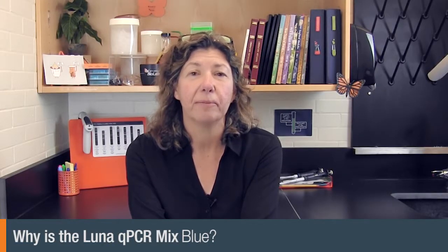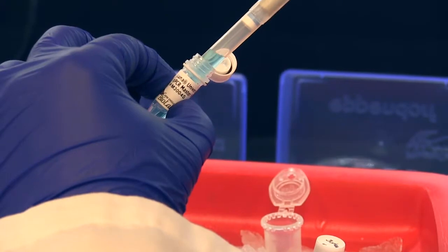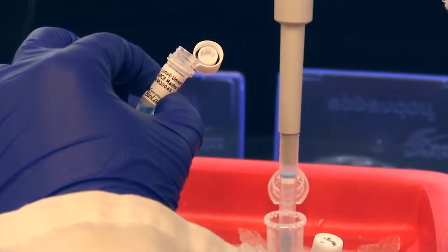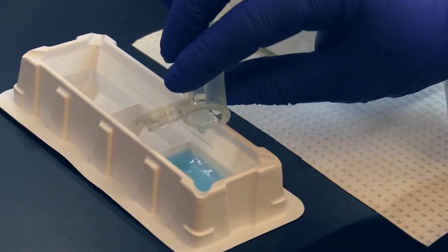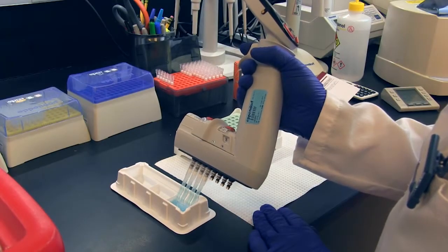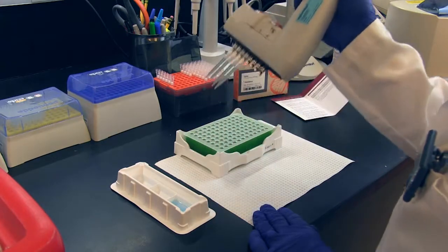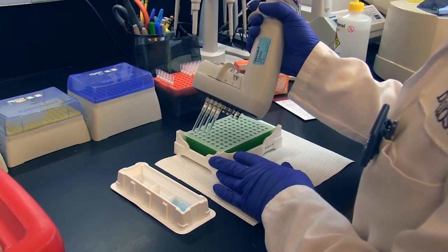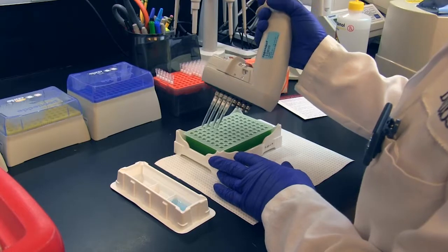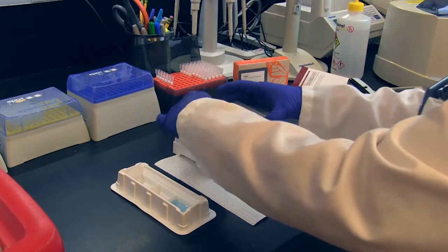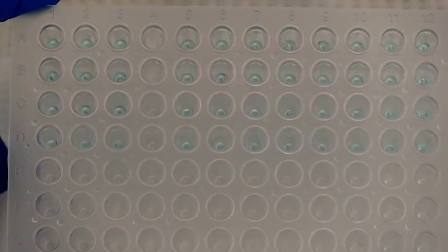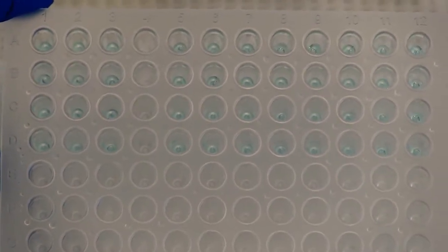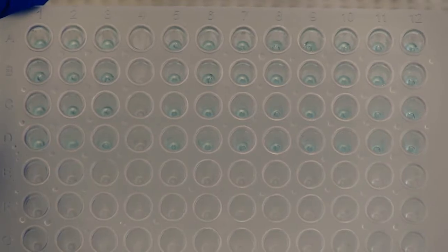Another common question we receive is why is the Luna qPCR mix blue? So this mix contains an inert reference dye that gives it a clear blue color. This colored appearance makes it easier to identify which wells of a qPCR plate have been loaded with reagents. And this can be very difficult with the small well size and opaque nature of many 96 and 384 well qPCR plates. The blue dye has been studied extensively in both qPCR and PCR, and it does not inhibit or interfere with qPCR detection.